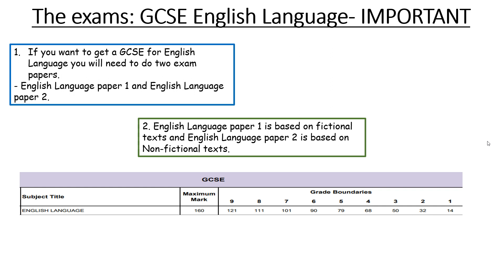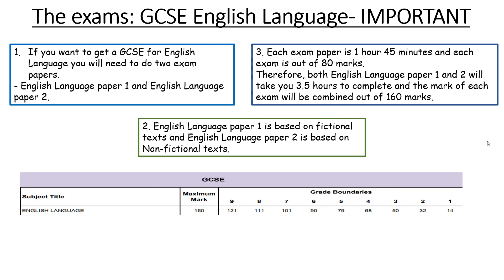You need to start to understand what is asked of you. Each exam paper is one hour and 45 minutes, and each exam paper is out of 80 marks. Therefore, both English Language Paper 1 and Paper 2 will take you three and a half hours to complete, and the mark of each exam will be combined out of 160 marks. Typically, Paper 1 is on a Monday and Paper 2 is on a Wednesday — two separate one hour 45 minute exams, both 80 marks, combined 160 marks.